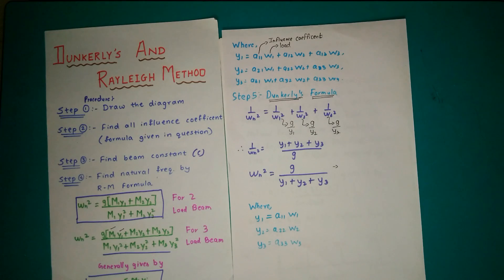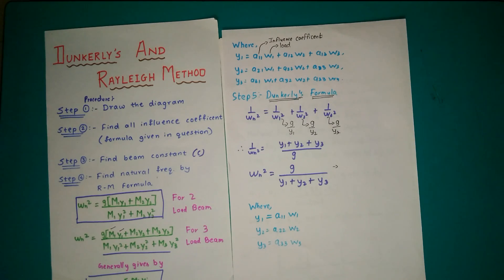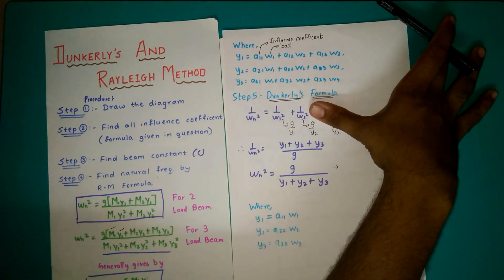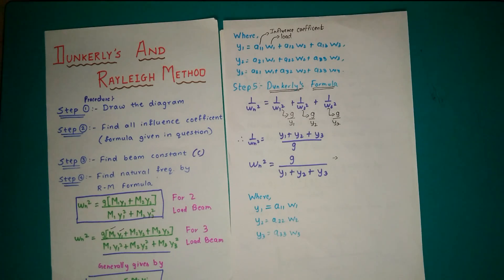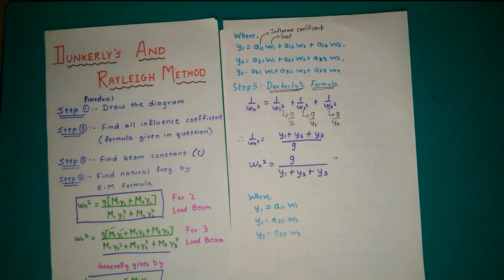Step 3 involves Dunkerley's formula. The Dunkerley's formula is: 1/omega_N squared = 1/omega_1 squared + 1/omega_2 squared + 1/omega_3 squared. These terms depend on the number of loads — if there are only 2 loads then only 2 terms are used. Here omega_1 is given by sqrt(G/Y1), where G is 9.81 (gravitational acceleration), Y1 is the deflection given by A11*W1, Y2 = A22*W2, Y3 = A33*W3, where A11, A22, A33 are the influence coefficients.